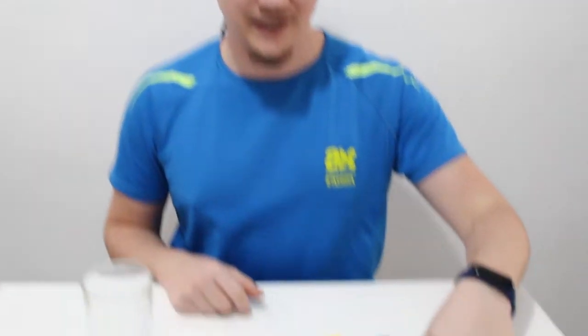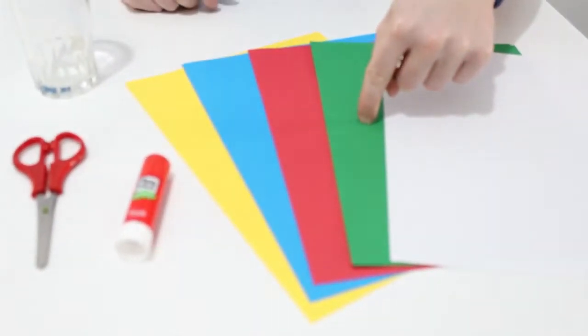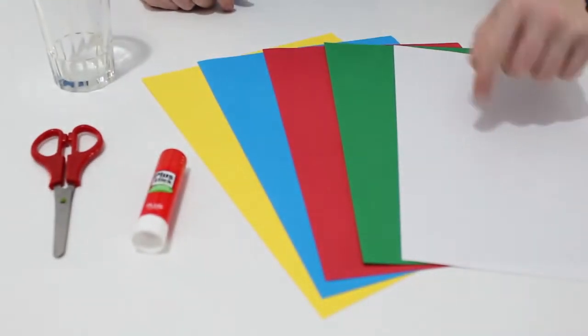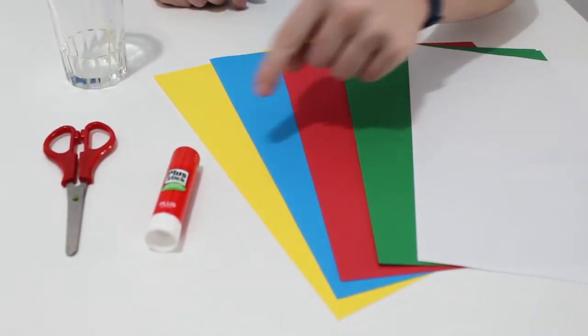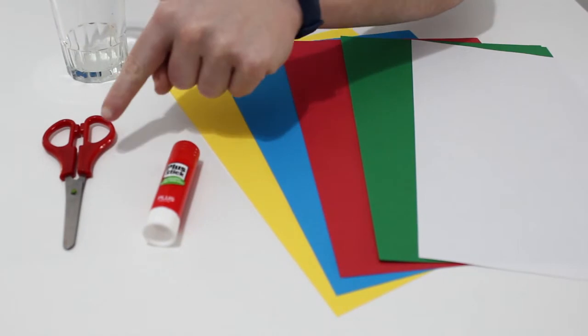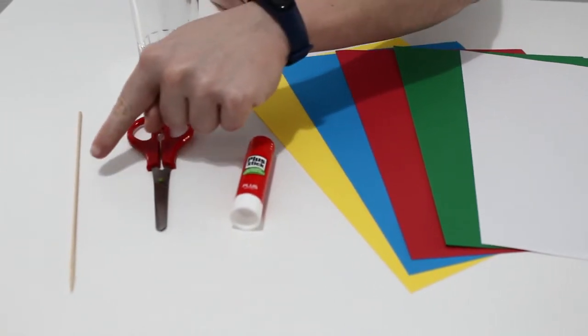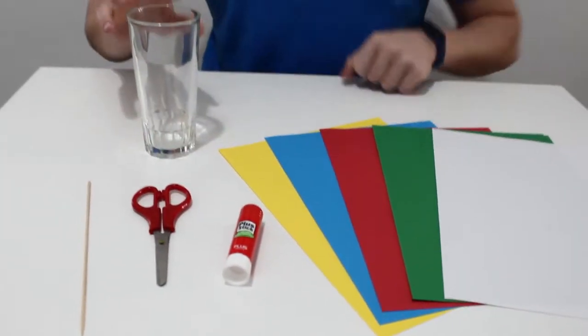Para ello vamos a necesitar folios de colores, o si no tenemos, folios blancos y luego los decoraremos. Pegamento, tijeras, un palillo de brocheta y un vaso alto o un jarrón. ¡Vamos a ello!